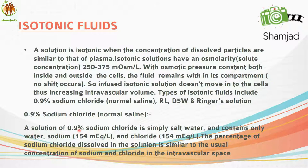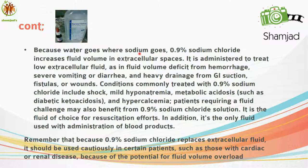Normal saline (0.9% sodium chloride) is simply salt water containing only water and sodium — sodium 154 mEq/L and chloride 154 mEq/L. Because water goes where sodium goes, 0.9% sodium chloride increases fluid volume in extracellular spaces. It treats low extracellular fluid as in fluid volume deficit from hemorrhage, severe vomiting or diarrhea, heavy GI drainage, fistulas or wounds. Conditions commonly treated include shock, mild hyponatremia, metabolic acidosis such as diabetic ketoacidosis, and hypercalcemia.